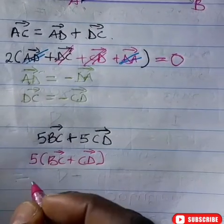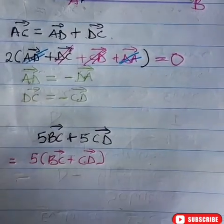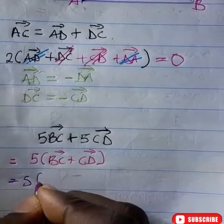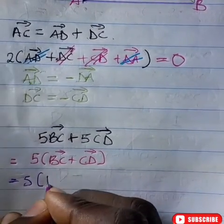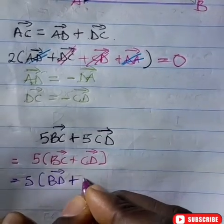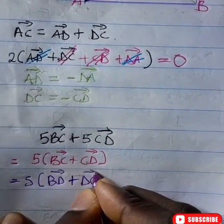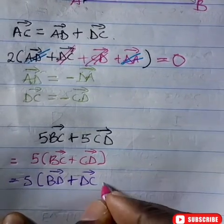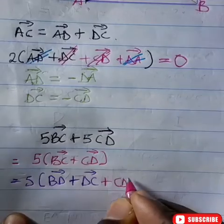So this is going to be equal to 5 into BD plus DC, then plus CD.